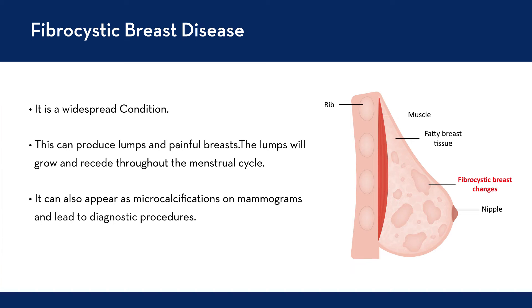There are other kinds of benign conditions in the breast. A condition called fibrocystic breast disease is very common, where many women develop lumps and painful breasts. The lumps will grow and recede over the course of the menstrual cycle. Fibrocystic breast disease can also appear as microcalcifications on mammograms and can lead to diagnostic procedures such as biopsies. When you look down the microscope at breast tissue, there are a few types: fatty tissue, which is always benign, fibrous tissues, and glandular tissues.